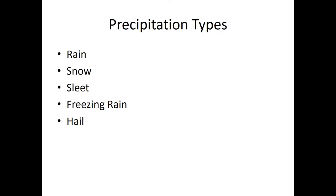They're called rain, snow, sleet, freezing rain, and hail. Now most people have been in rain, snow, and hail before. But what about sleet and freezing rain? I'm pretty proud to say that in the most recent years I've actually experienced both of them, and they're both pretty fascinating. But let's talk about all five of these now.